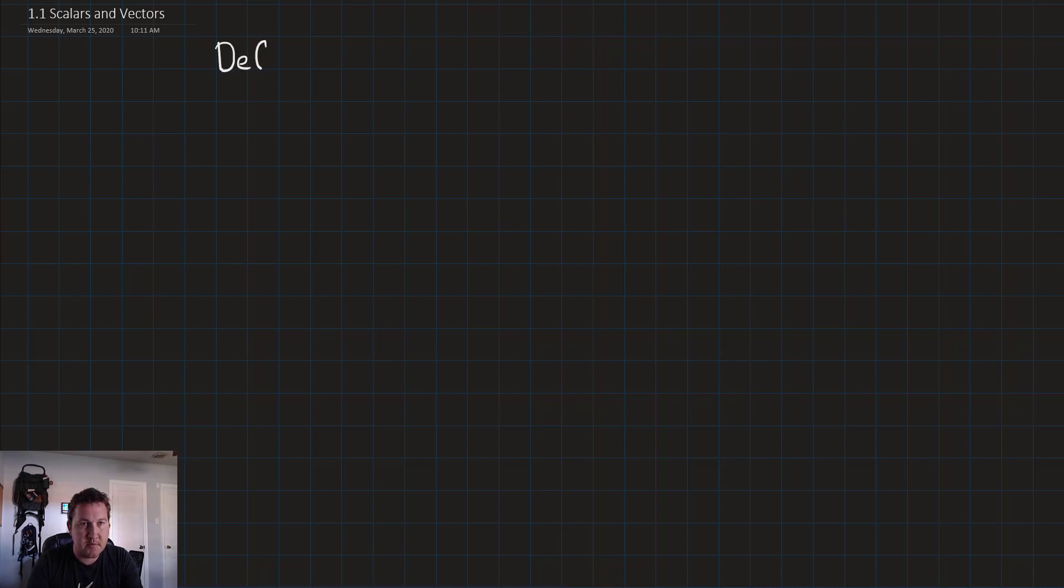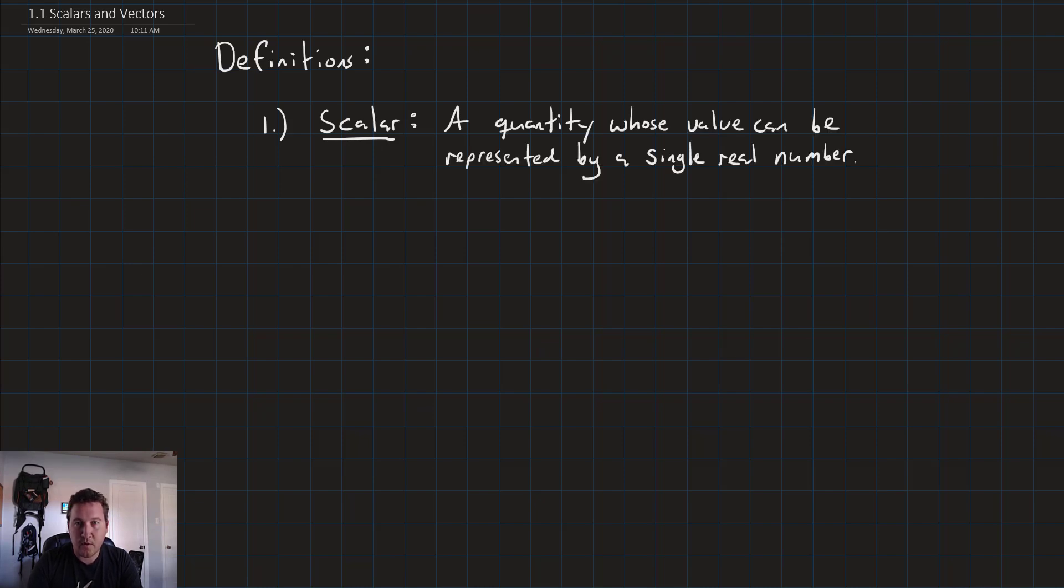Like I said, we're going to have some definitions, and primarily we're going to have two definitions. The first one here is we need to define what a scalar is. A scalar is a quantity whose value can be represented by a single real number, and the important thing here is single real number.